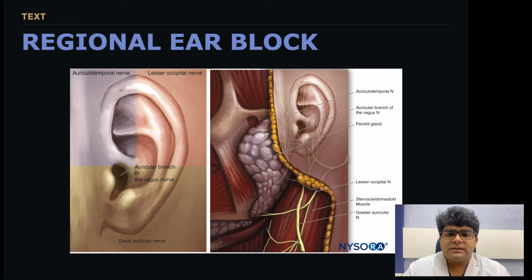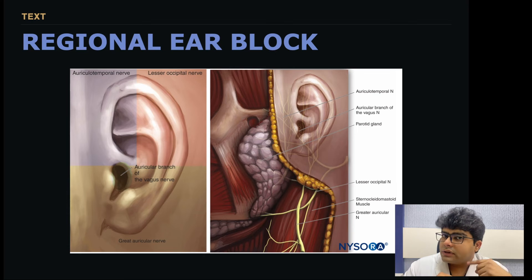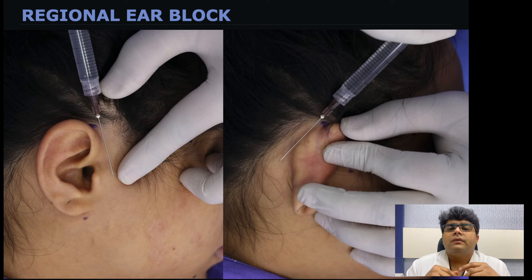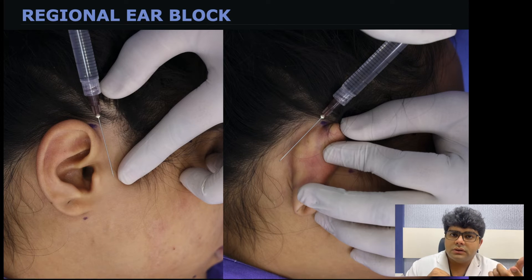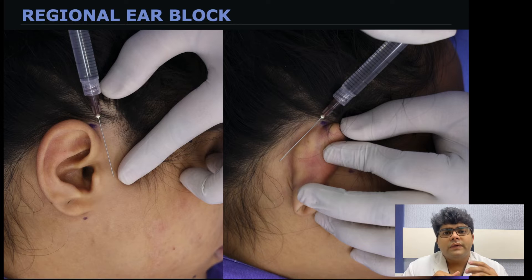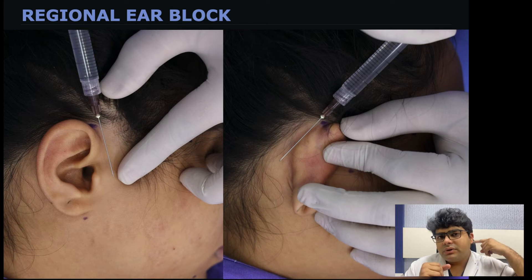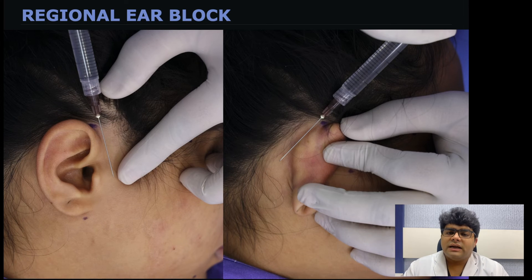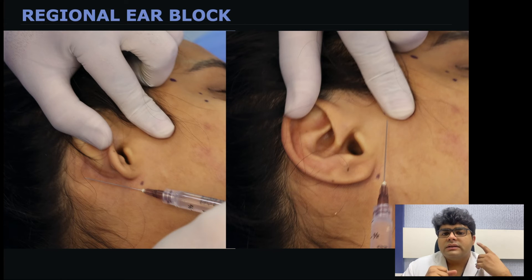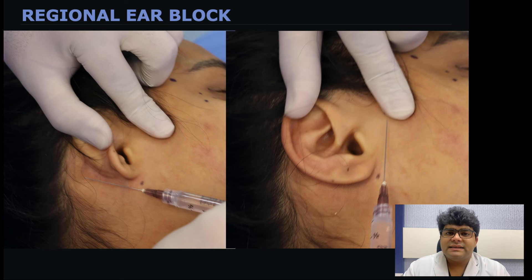The ear is supplied by three nerves. By superficially infiltrating the borders of the ear, we can block it and give anesthesia to the ear skin for superficial skin surgeries. The approach uses two points above the ear and two below, going superficially under the skin to create a diamond-shaped infiltrative border. From the top, two needle directions, and from below, two more — covering the whole border of the ear.